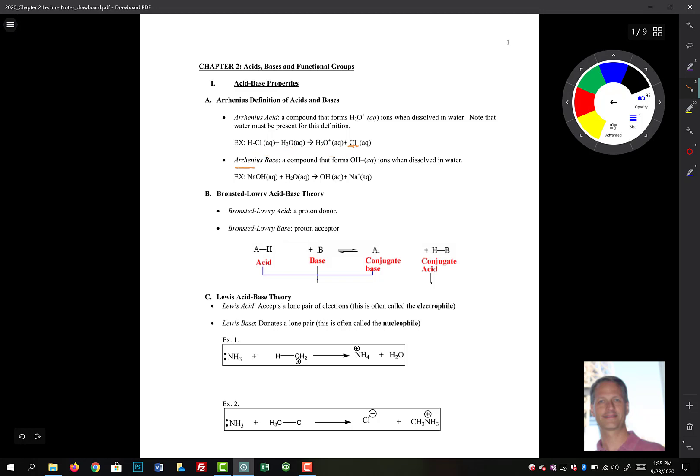And then a base, an Arrhenius base, is a compound that forms hydroxide when dissolved in water again. Here we have sodium hydroxide reacting with water to form hydroxide and Na plus. Not really much of a reaction there, more of a dissolving, but nonetheless that's the acid-base reaction.